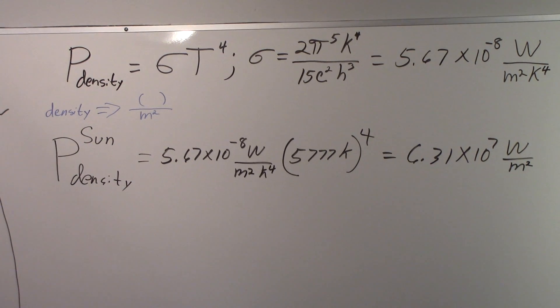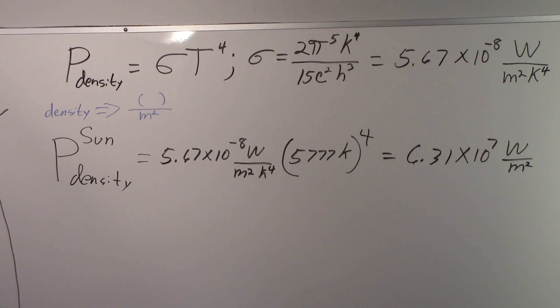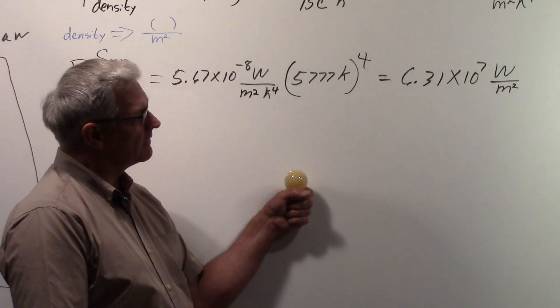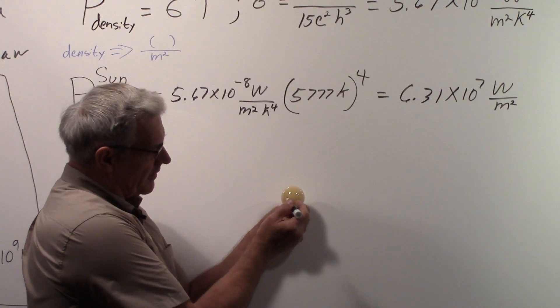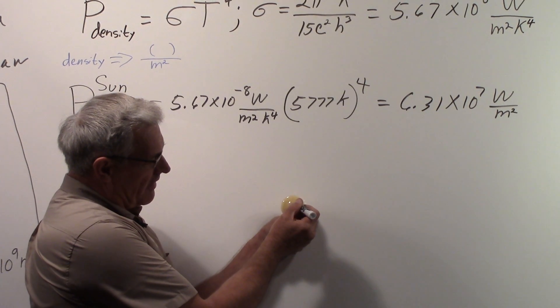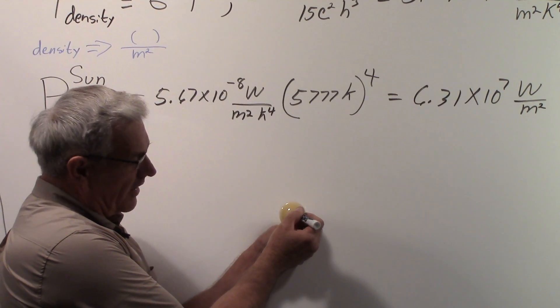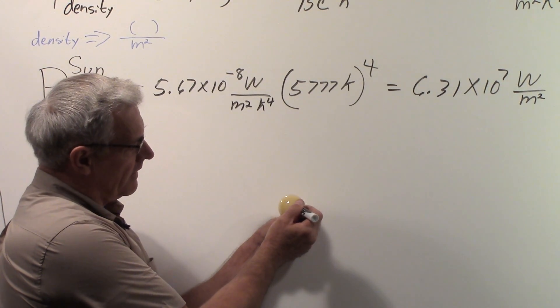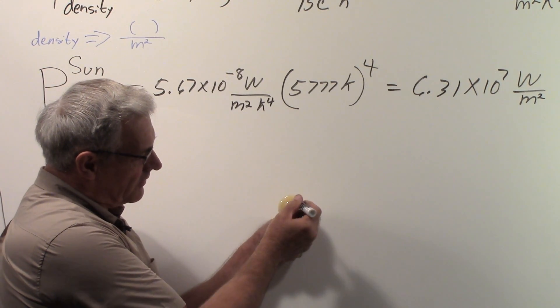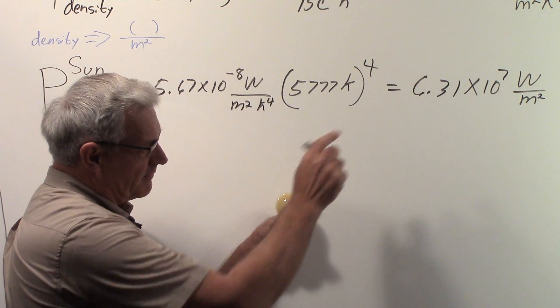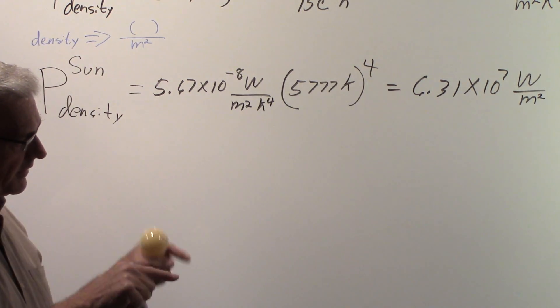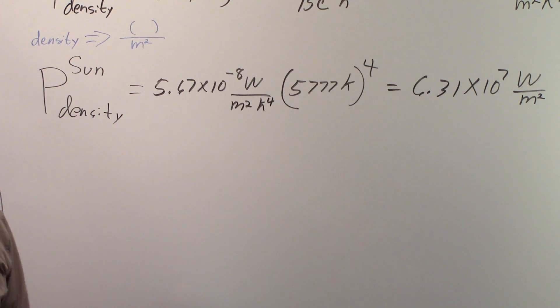Now what does that mean? Let's say that this is the sun. That number represents the power coming out of every square meter on the sun's surface. So every square meter all around the sun, that is the amount of power in watts that's coming out of each square meter on the sun's surface.